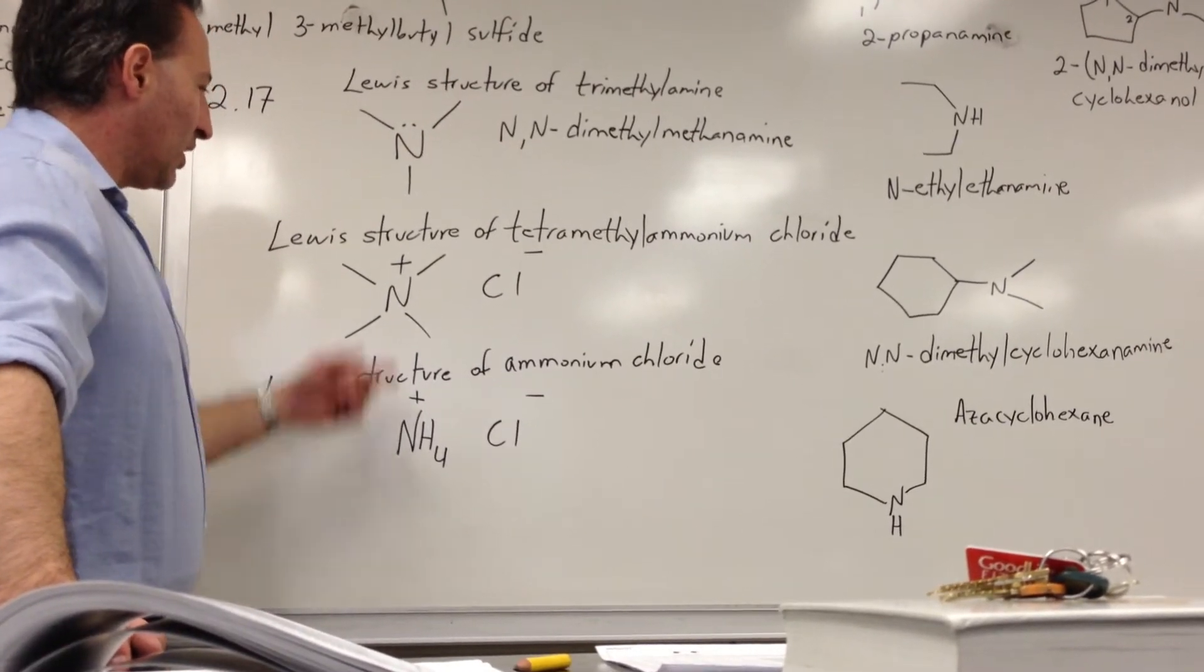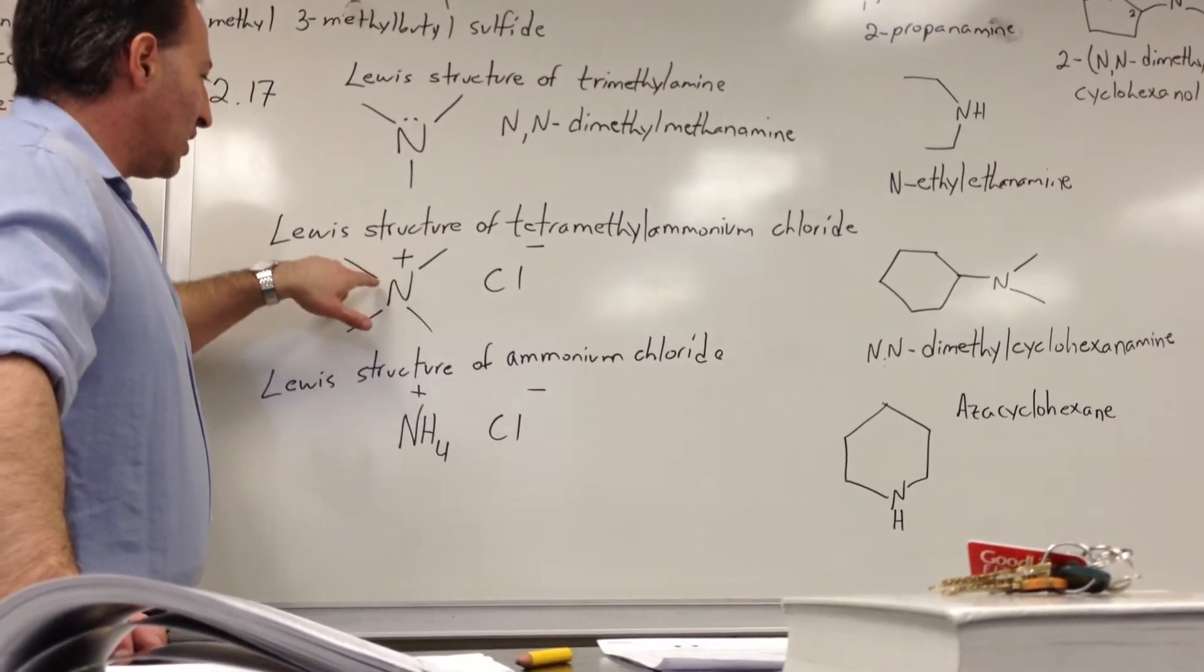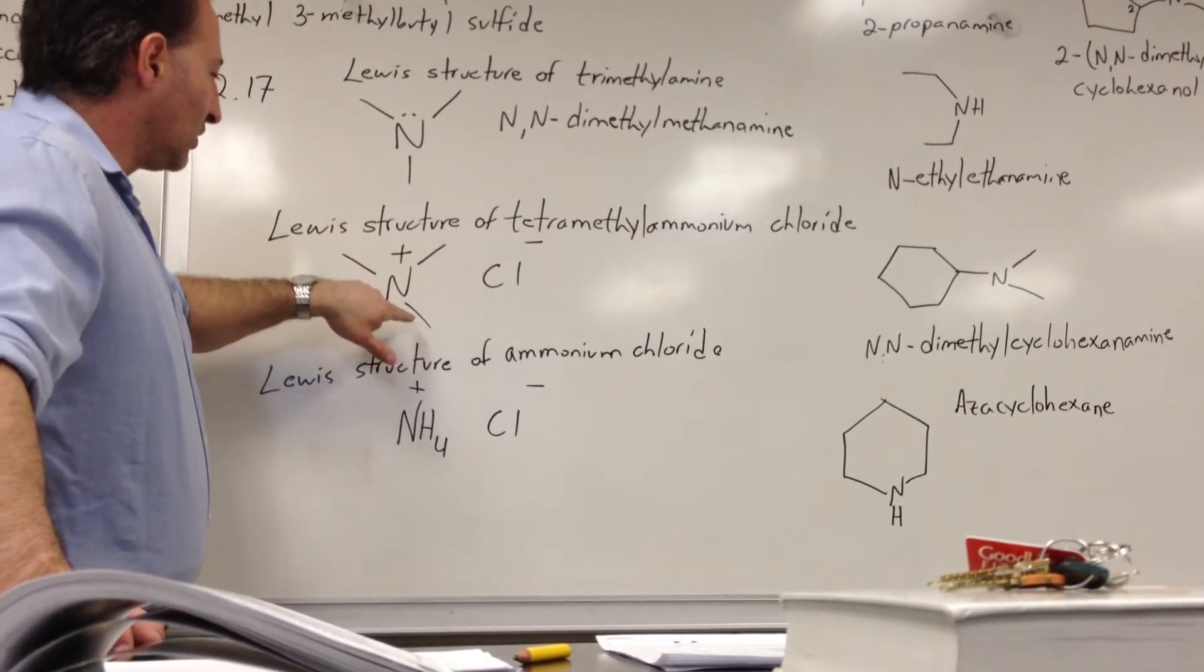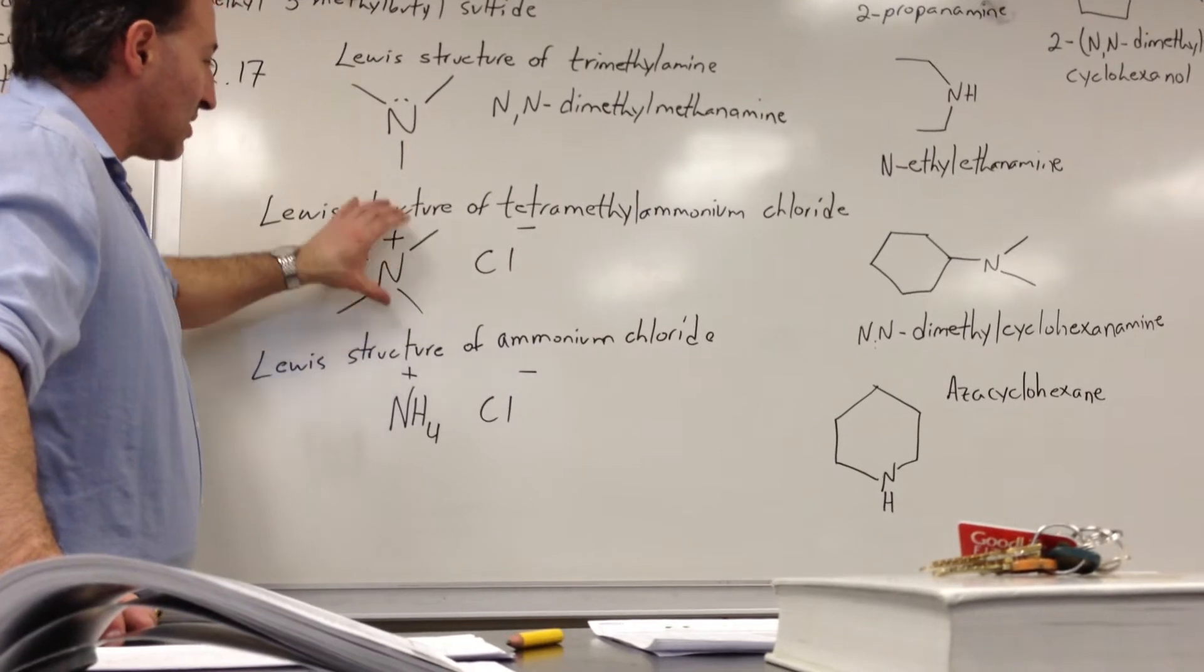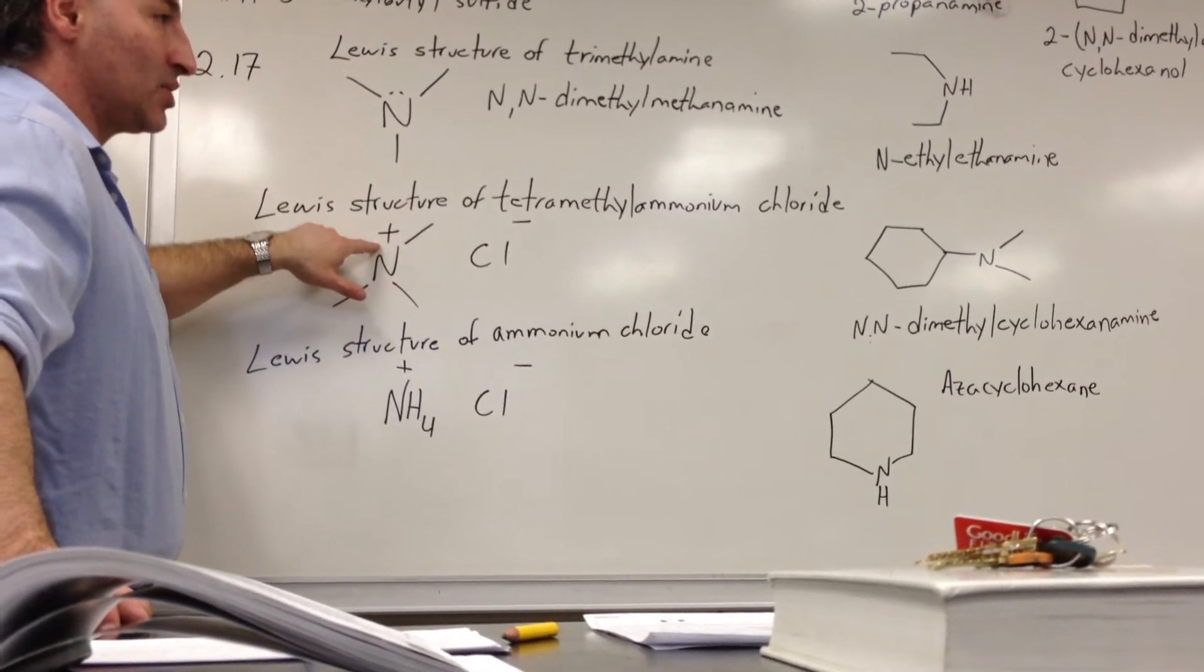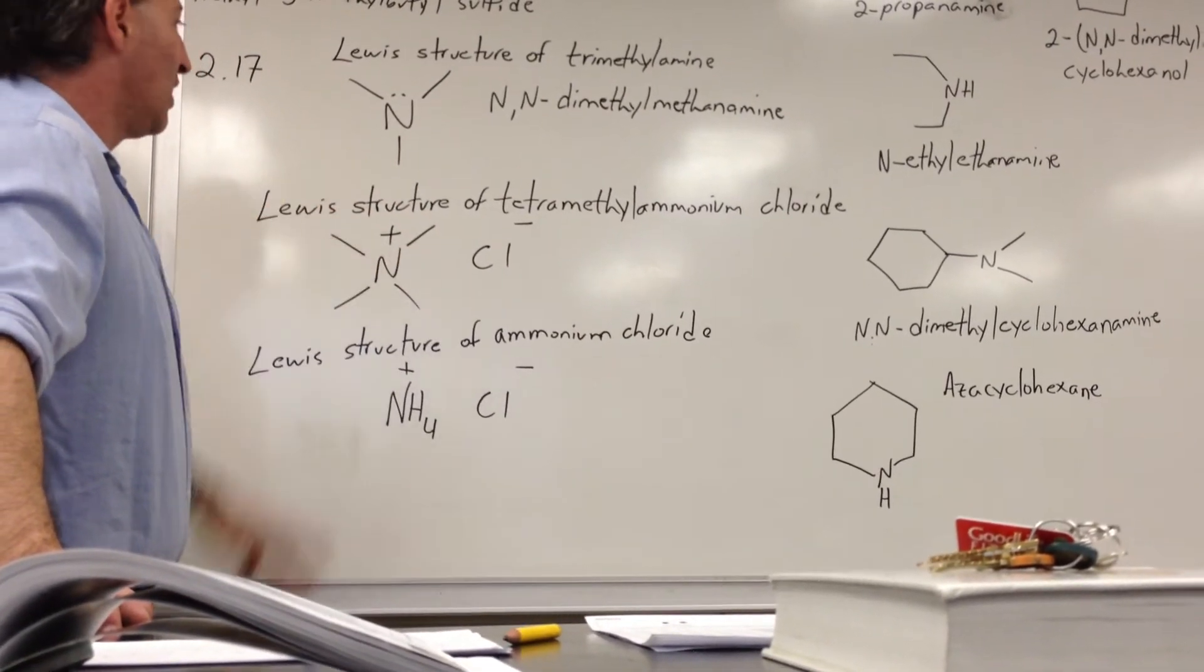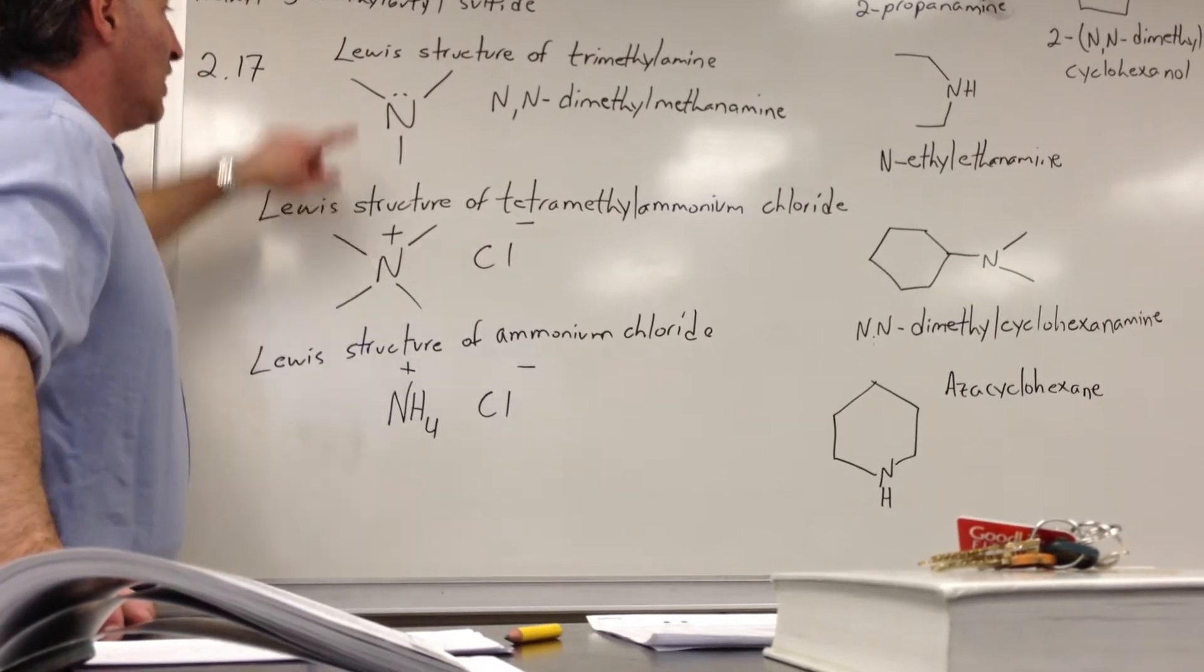Lewis structure of ammonium chloride is shown here. Notice how the octet is fulfilled and that there are four electrons in possession of nitrogen.